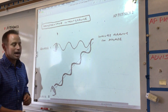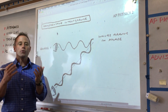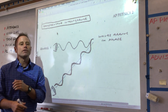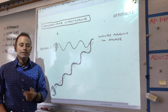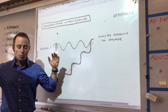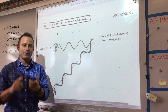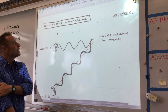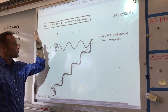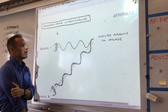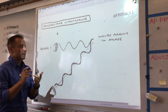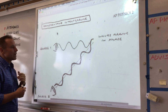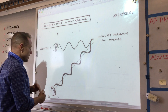We're going to take a closer look at the conditions under which waves add together to make constructive interference — for example, loud sound, bright light, or tall water waves — versus conditions when wave sources conspire to make quietness, smooth water, or darkness. So first let's look at the case of constructive interference, where you get loudness, tall water waves, or bright light.